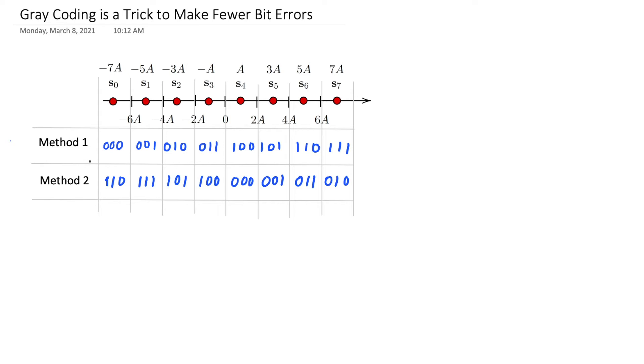I'm going to present two different ways to assign bit strings to symbols in this 8PAM constellation. So it's 8PAM, log base 2 of 8 is 3. I have three bits in each symbol.